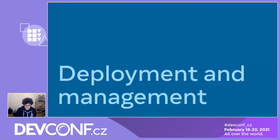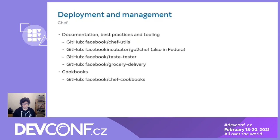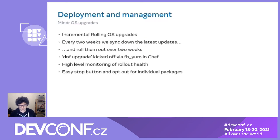A few words about deployment: we use Chef for config management — similar to Ansible or Puppet. I'll skip the details since most people know how it works. There are links to the tooling we use if you're interested in using Chef with the same model and tooling as Facebook, some of which is also packaged in Fedora. What I think people are more interested in hearing about is how we do updates.